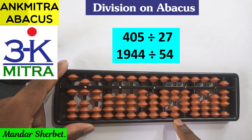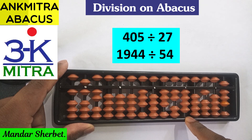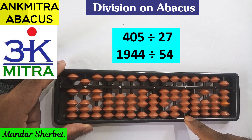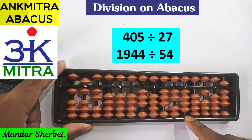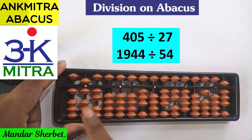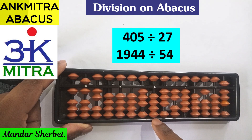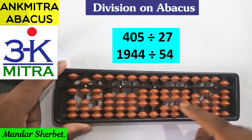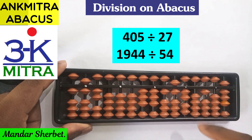After subtracting 162 from 194, the remaining number on the question set up to this rod is 32, which is smaller than our divisor 54. So we move one rod further. Now we can see 324 up to the units-place rod of the question set. From 324, we can subtract 162 very easily. Since 324 ends on the units-place rod, the next answer digit goes on the units-place rod of the answer set. We place 3 there.